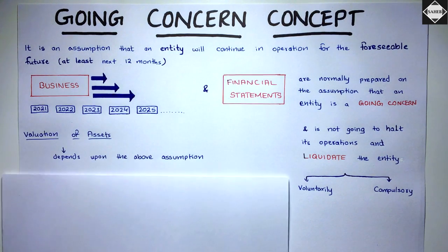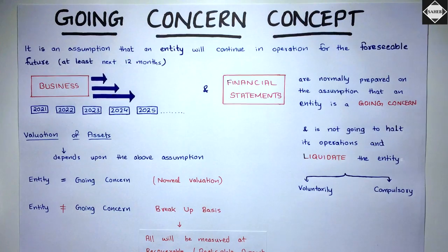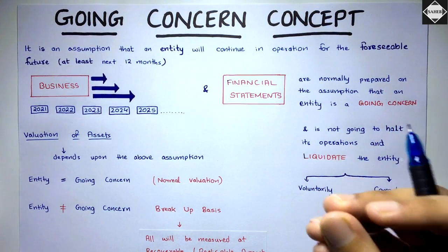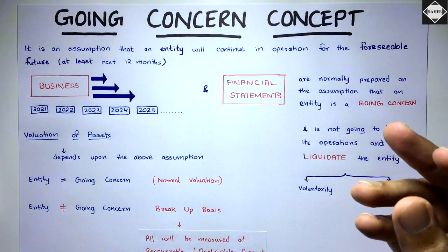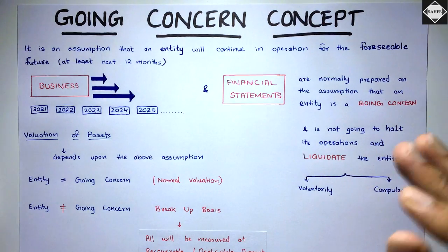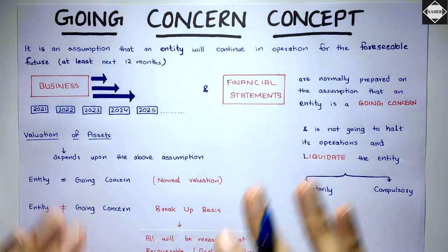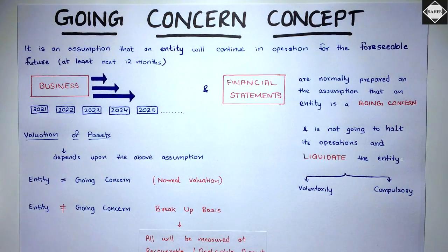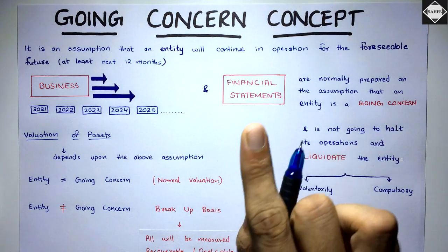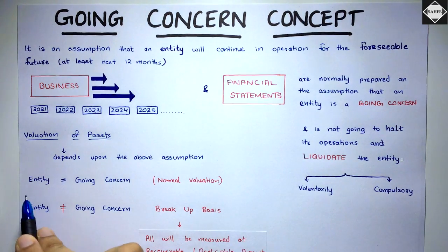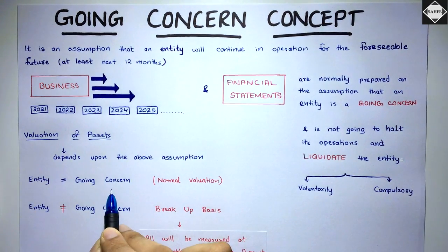The next point is the valuation of assets. Normally, assets are valued on a historical cost basis — there are also many other models to value assets — but that normal valuation only happens when the entity is a going concern.